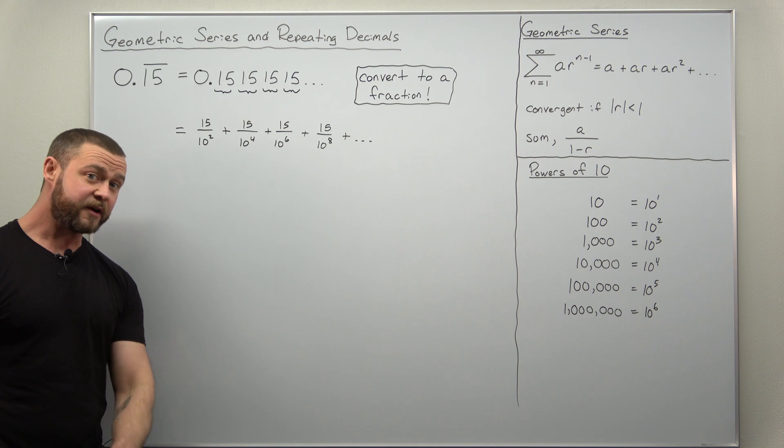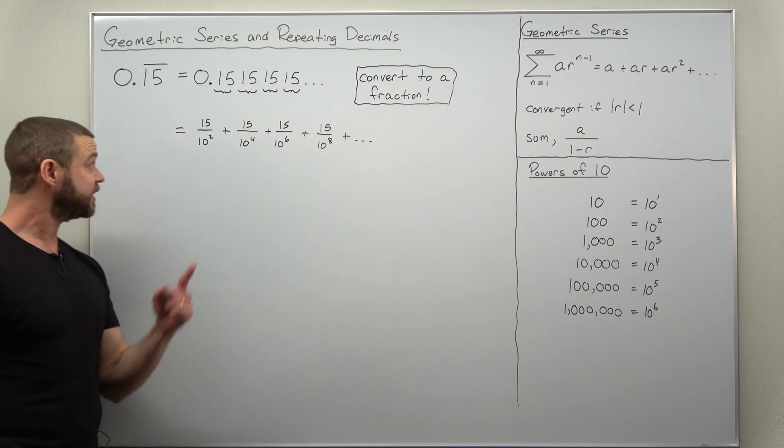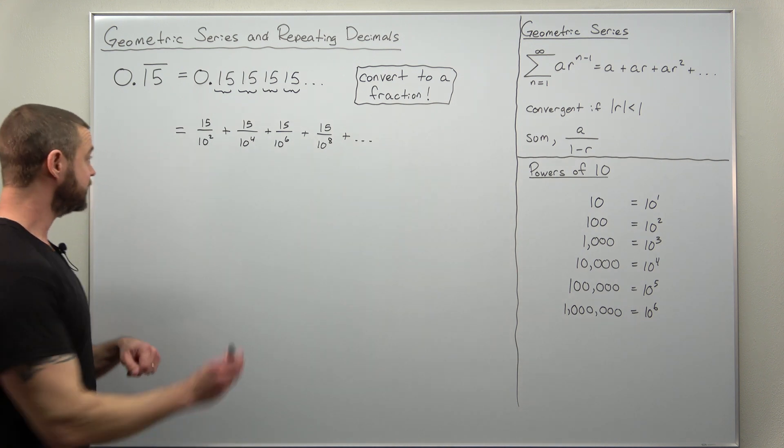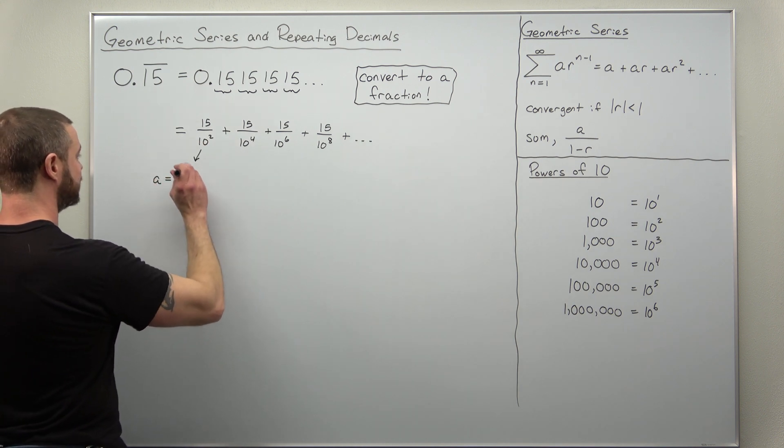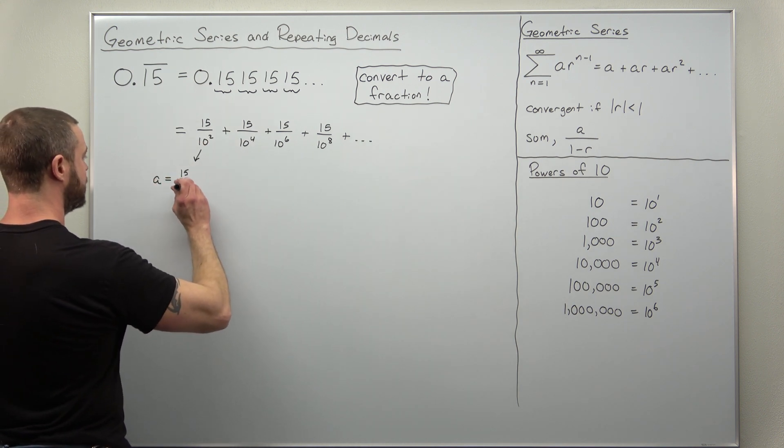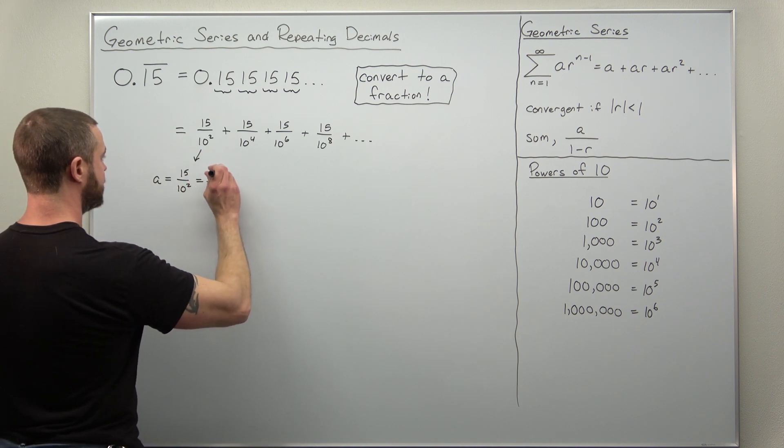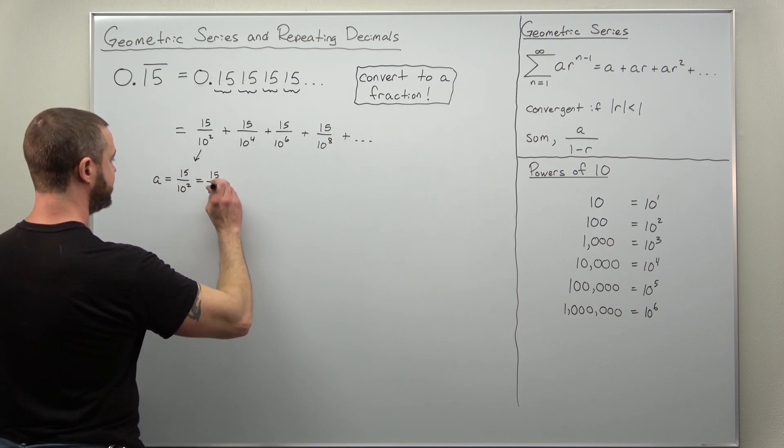All right. And what we have here is a geometric series. Our first term is our value for a. So a equals 15 over 10 squared. 15 over 100.